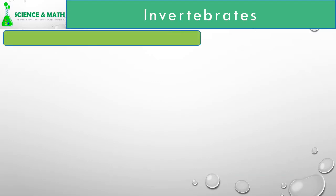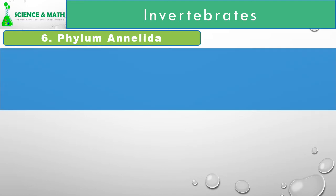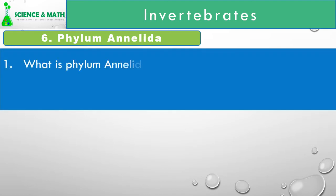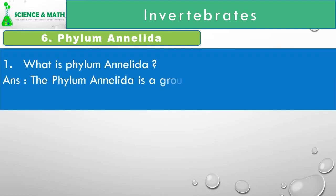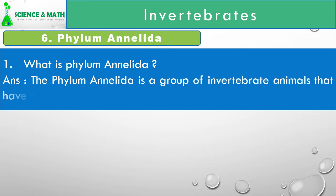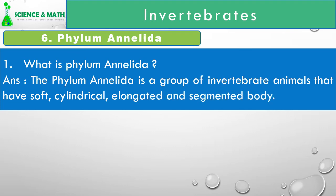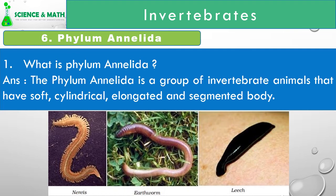Phylum Annelida. The Phylum Annelida is a group of invertebrate animals that have soft, cylindrical, elongated, and segmented body. For example, Nereis, Earthworm, and Leech.